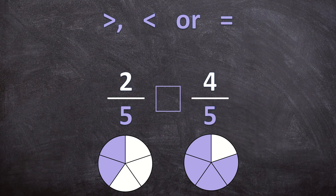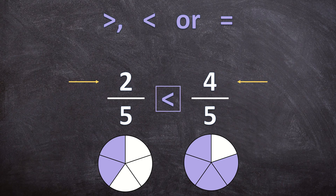Now which one is bigger? Which one has more colored-in pieces? The second fraction, 4 over 5, is going to be bigger than the first fraction, 2 over 5. So when we have denominators that are the same, we are going to look at the numerators to determine which fraction is bigger.